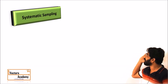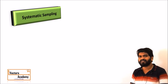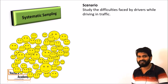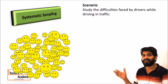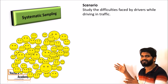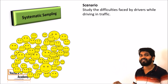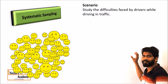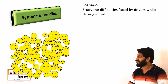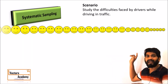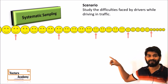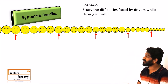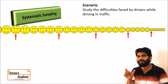The next method is systematic sampling. As the name suggests, we follow a certain order in selection. Suppose we research people facing difficulty in driving in traffic — the population will have different heights. If we use simple random sampling and accidentally select only short people, the sample mean will differ from the population mean. So we arrange the population in ascending or descending order and then select every fifth element in a systematic way. This is called systematic sampling, where a specific rule governs sample selection.